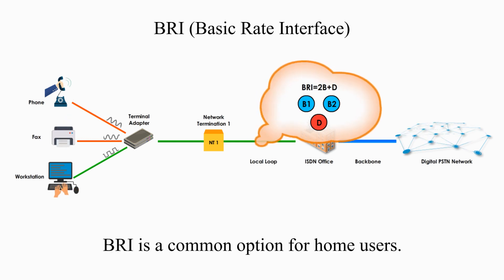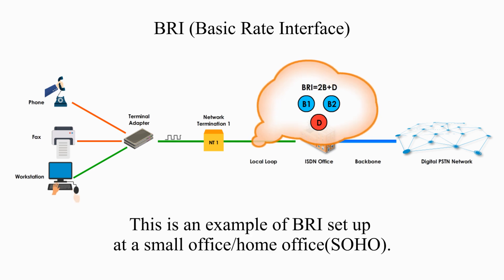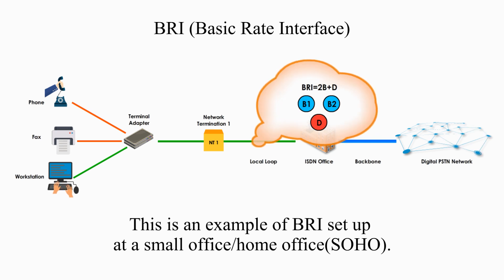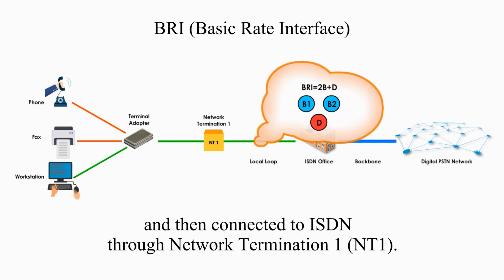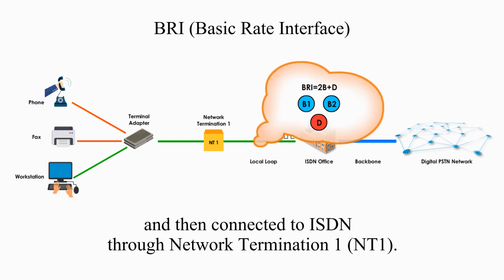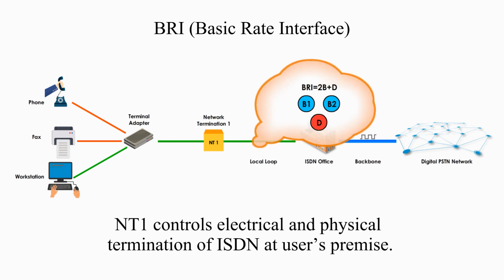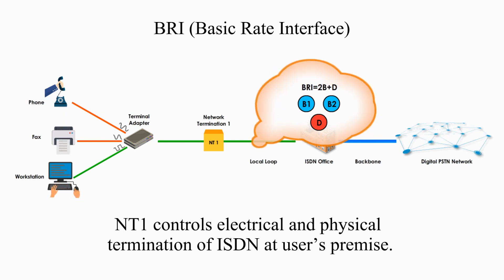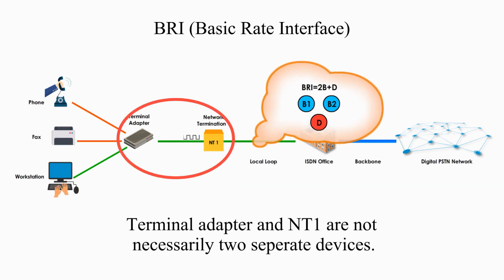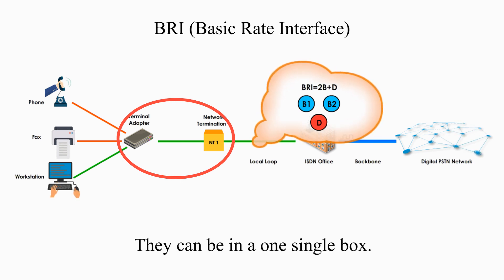BRI is a common option for home users. This is an example of a BRI setup at a small office or home office. Three different types of data are converted to ISDN formats and then connected to ISDN through Network Termination 1, or NT1. NT1 controls electrical and physical termination of ISDN at a user's premises. The terminal adapter and NT1 are not necessarily two separate devices — they can be in one single box.